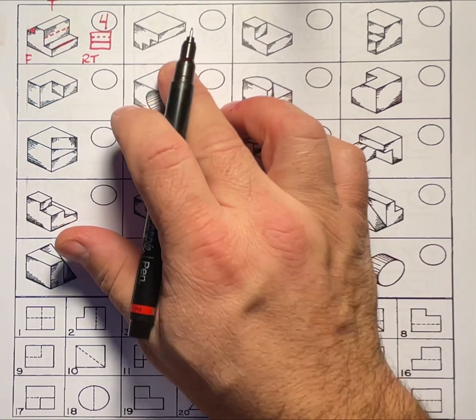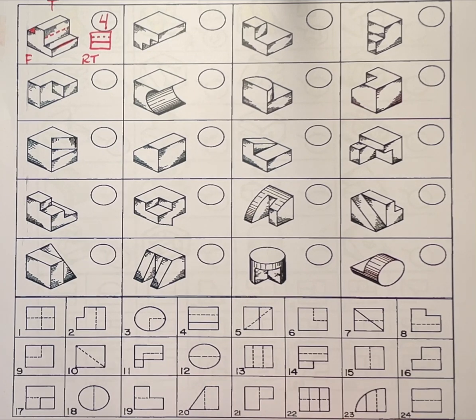Now let's go to problem number two. Again the first step is to determine what view has the hidden line. Is it the front, the top, or the right?